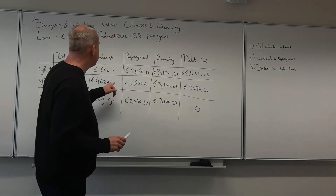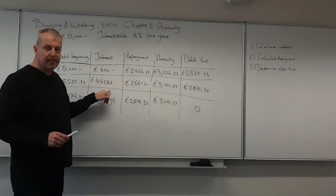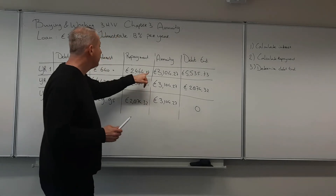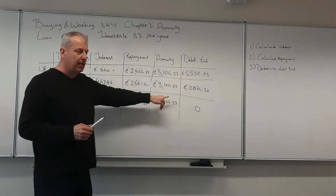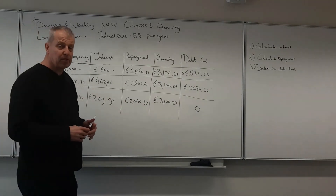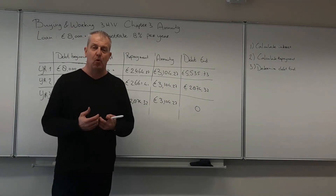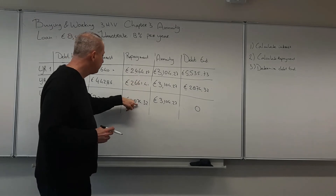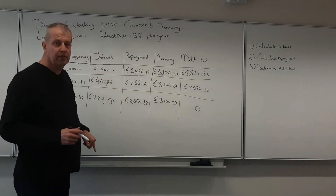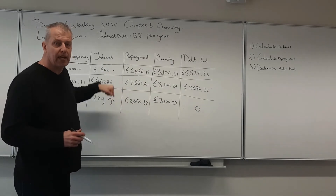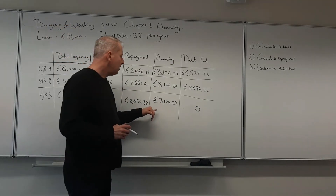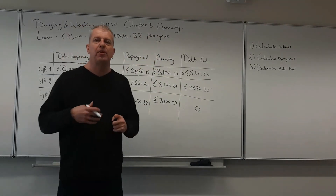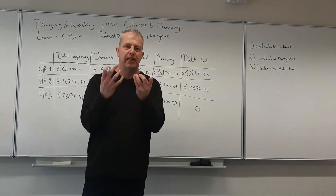We can now observe that the interest keeps getting smaller and smaller. That is because we repay the loan every year, which means the debt becomes smaller. And if the debt becomes smaller, the interest amount gets smaller too, which leaves more room for repayment. So the repayment goes up and the interest goes down — both exponentially. We can also add up all the interest to determine how much interest was paid in total.